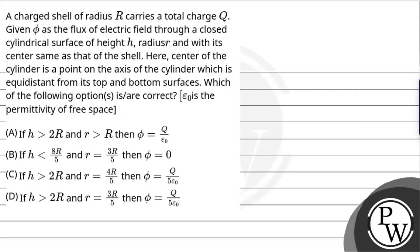Let's hear out the question. A charged spherical conductor of radius R carries a total charge Q. Find the flux of the electric field through a closed cylindrical surface of height h and radius r, whose center is the same as the sphere's center — where the center of the cylinder is the point on the axis equidistant from its top and bottom surfaces. Which of the following options is correct? Epsilon naught is the permittivity of free space.